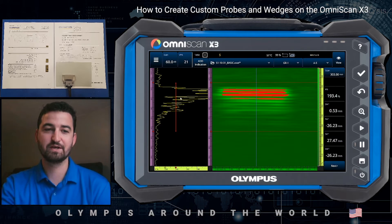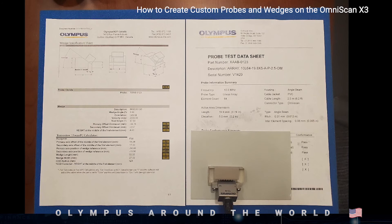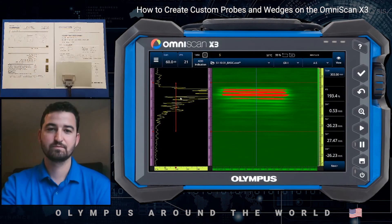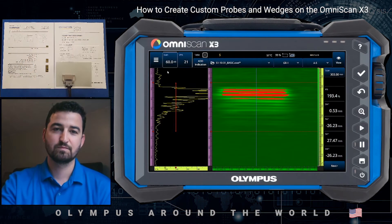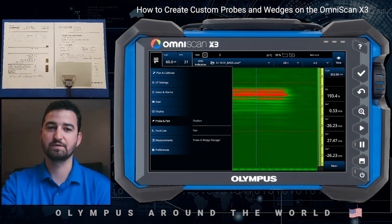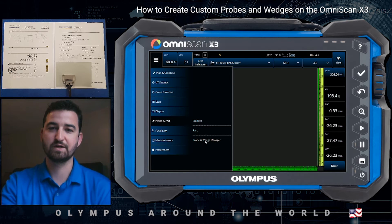Before we begin, you need to have your data sheets for the wedge on the left and the probe on the right. Then we enter the burger menu on the OmniScan X3. We go to probe and part, then probe and wedge manager.